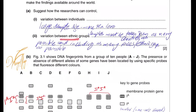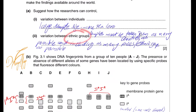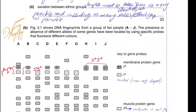Variation between ethnic groups can be controlled by taking samples from as many countries as possible, including as many races and ethnic groups as possible, so this will account for all ethnic groups as well.